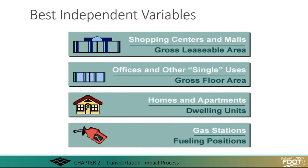ITE has many independent variables. Each land use code may have one or two independent variables. For instance, shopping centers use gross leasable area; offices and other single land uses use gross floor area; apartments use dwelling units; and gas stations use fueling positions. Choosing the right variable is really important and depends on the size of the development, as these independent variables do have an impact on the outcome.